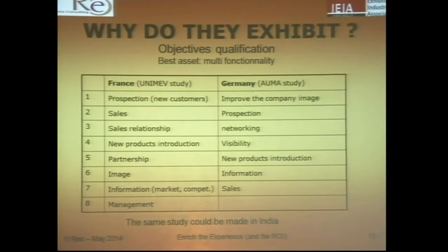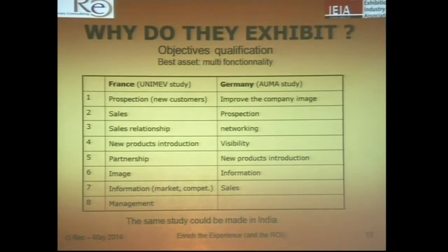Exhibitors who are using exhibition as a media to sell and develop their activities are very satisfied by the ROI. A COFA study shows that 1 euro invested in an international trade show generates an ROI of 35.8 euros. A French and German study asked exhibitors the same question — what are your main objectives, why do you exhibit? — and the answers are the same but not in the same order. In France, it's prospection first, then sales relationship, new product introduction, partnership, image, and information. Germany is first about image, then prospection, networking, visibility, new product introduction, information, and sales are the last criteria.